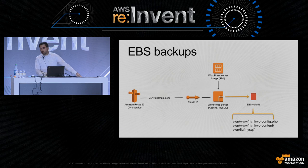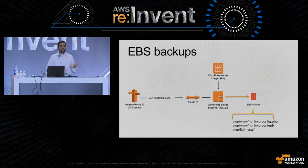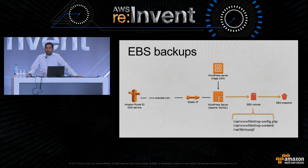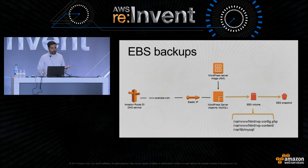That is not the only failure scenario. The EBS volume itself can fail, or we can always have human error — for example, my friend accidentally deleting some files in the admin panel. That's why we also need backups in S3, which takes the form of EBS snapshots. EBS snapshots are very cost-efficient because they are incremental backups — we only store the blocks that have changed since the previous backup.